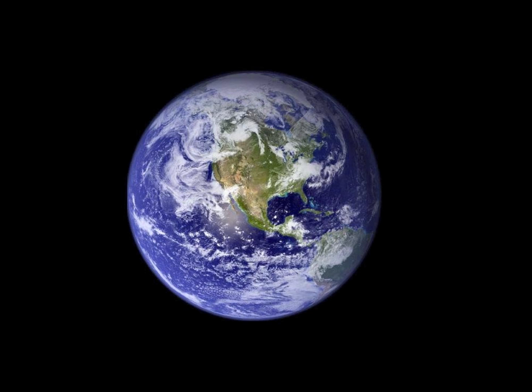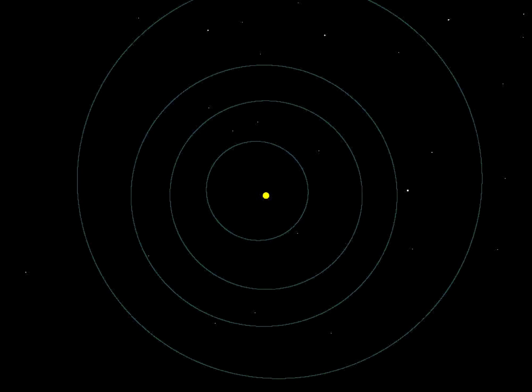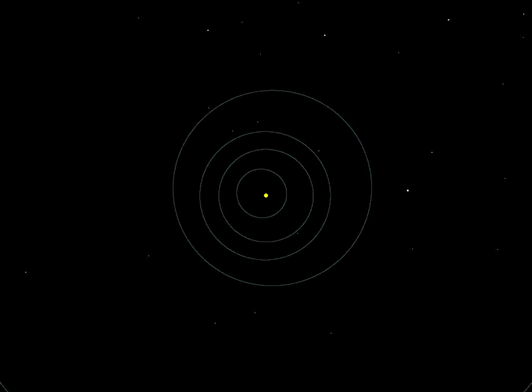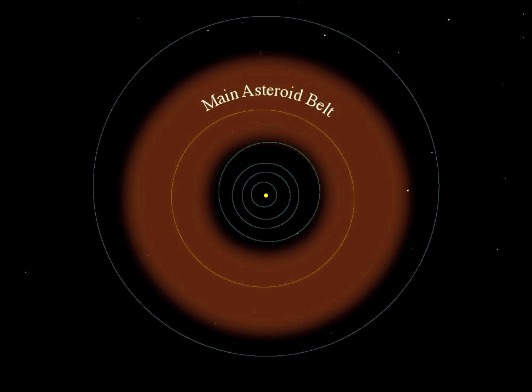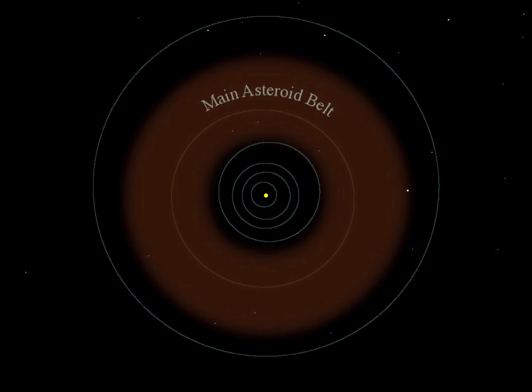This is the Earth, and this is an asteroid. This is the largest asteroid, Ceres. Like the planets, Ceres orbits the sun, but here, between the orbits of Mars and Jupiter. Most asteroids orbit the sun in this region, making up the main asteroid belt. But main-belt asteroids, including Ceres, never come close to the Earth, and so never present a hazard.